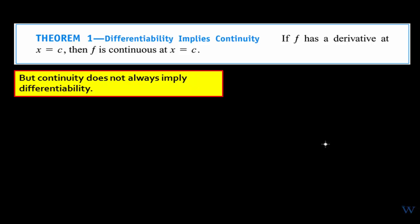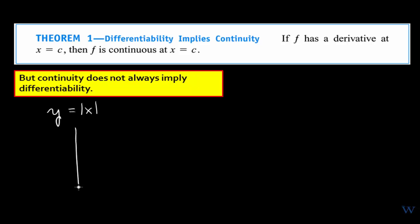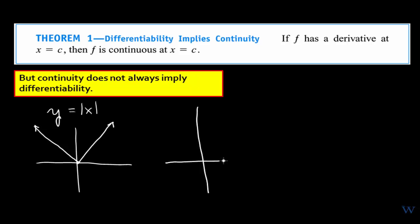Theorem one states that differentiability implies continuity: if f has a derivative at x equals c, then f is continuous at x equals c. However, continuity does not always imply differentiability. For example, y equals the absolute value of x is continuous everywhere, but the wedge or corner at the origin means it has no derivative at x equals zero.